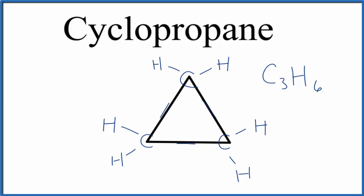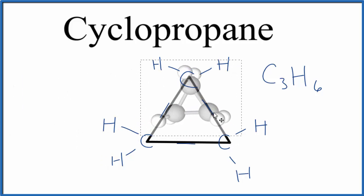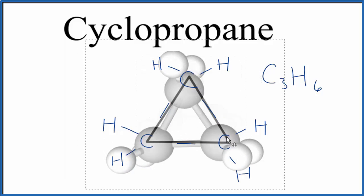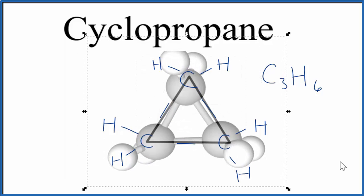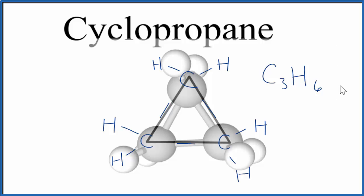You could even put a molecular model on top of this, and that would give you a sense of the three-dimensional structure. The gray atoms are the carbons, and the white ones are the hydrogens. So this is the structure for cyclopropane, and we have the molecular formula as well.